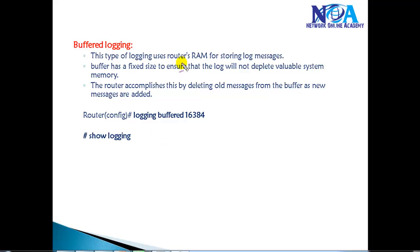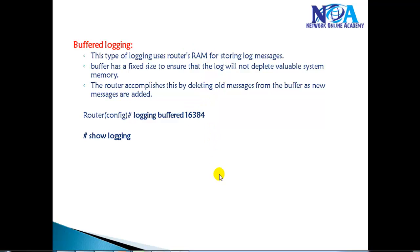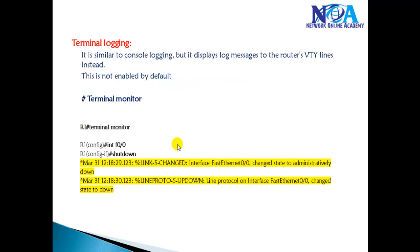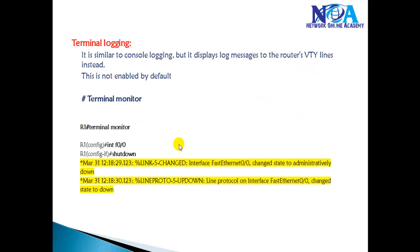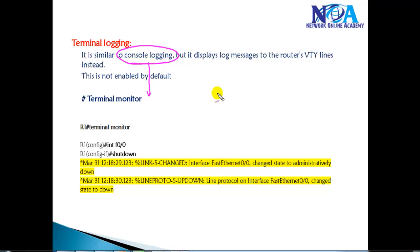A major drawback of buffer logging is that log messages are stored in local RAM and will be removed once the limit is reached or the router is powered off — it's not permanent logging. For permanent logging we need a better solution. Before covering external servers, let's discuss terminal logging, which is similar to console logging.